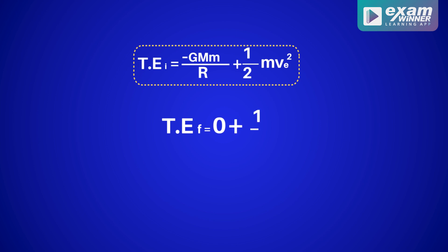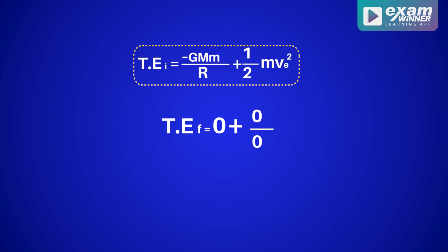What is the final kinetic energy? We already said that at infinity the velocity of the ball is zero. Therefore the final kinetic energy is also zero. The final potential energy is zero. So the final total energy is zero.